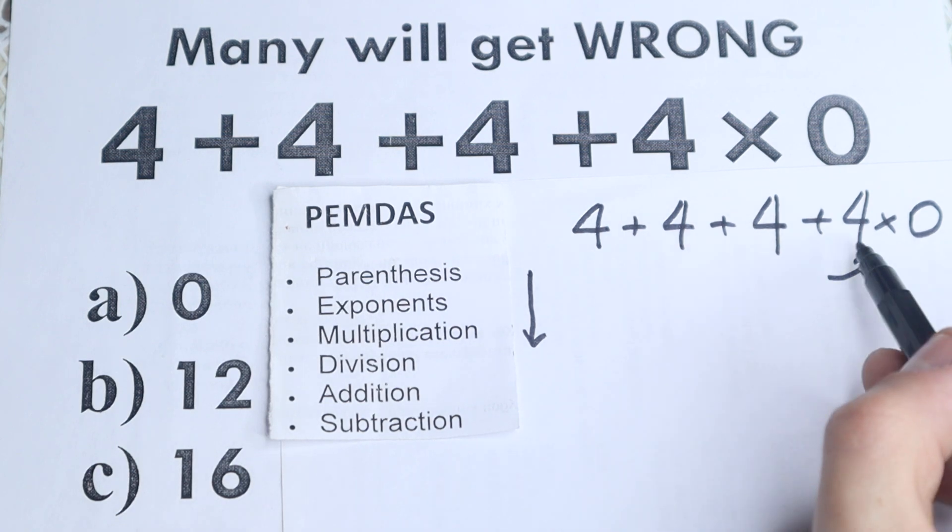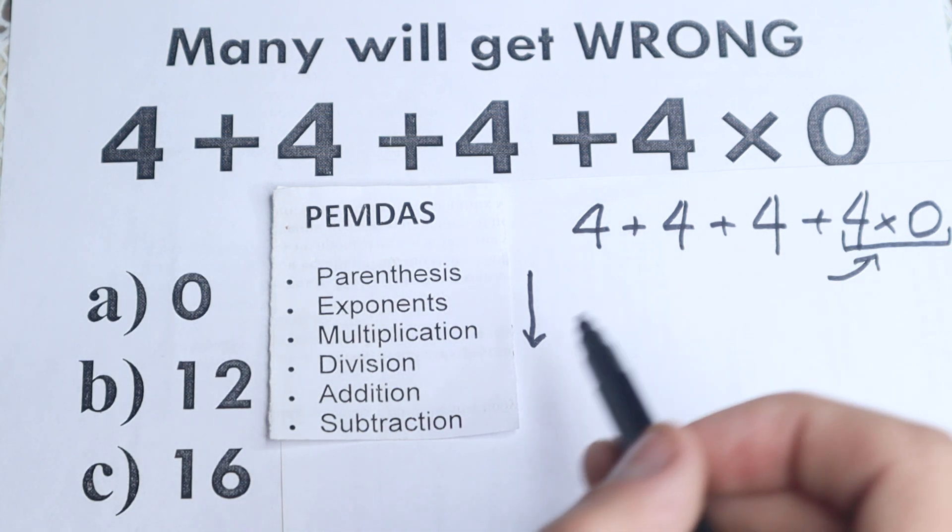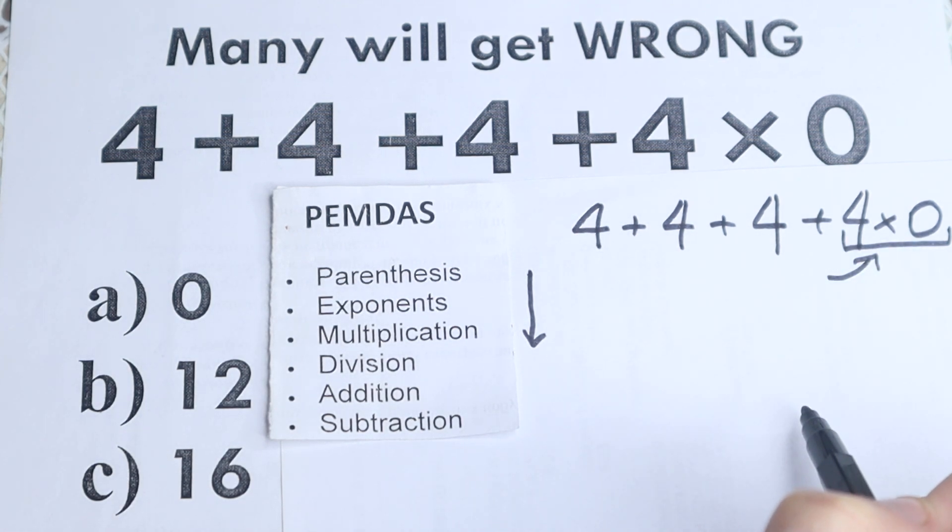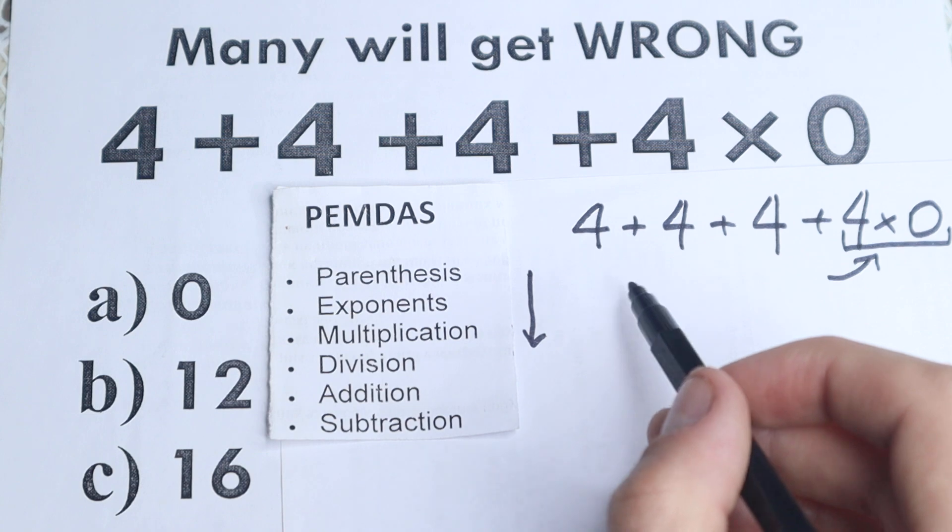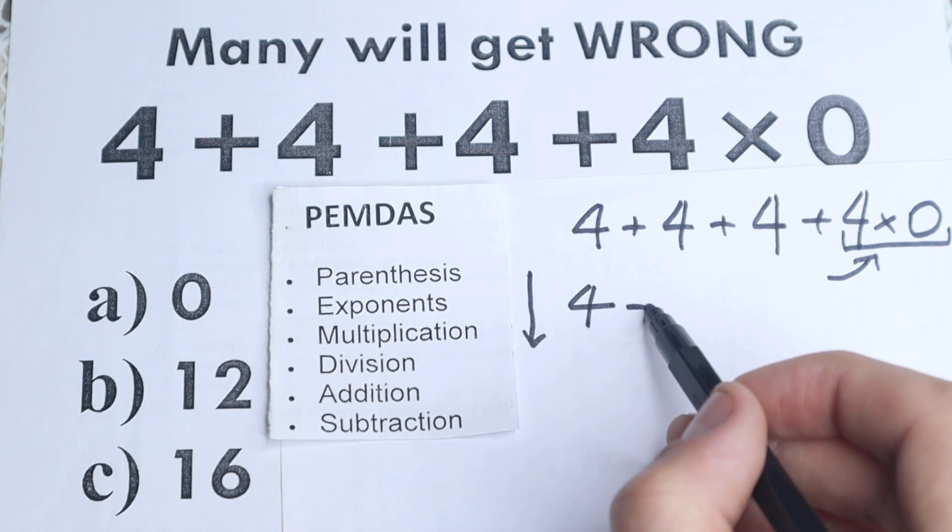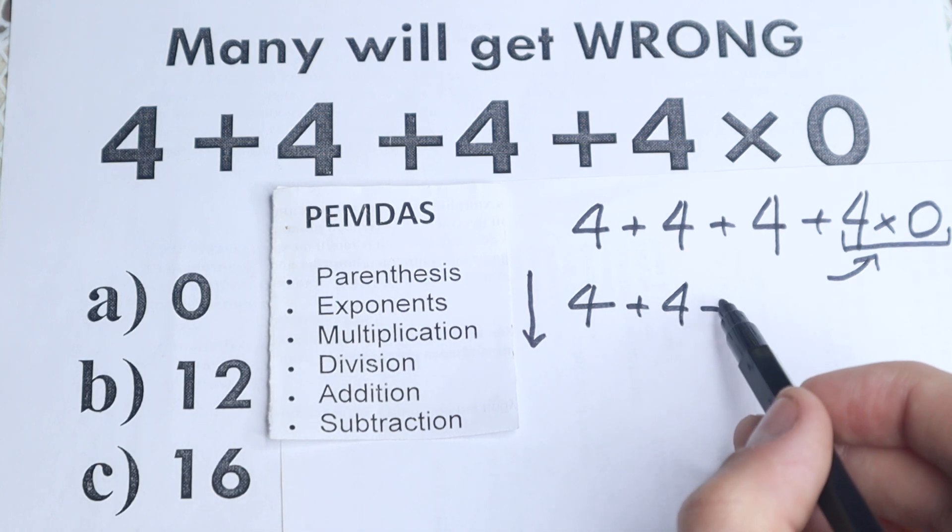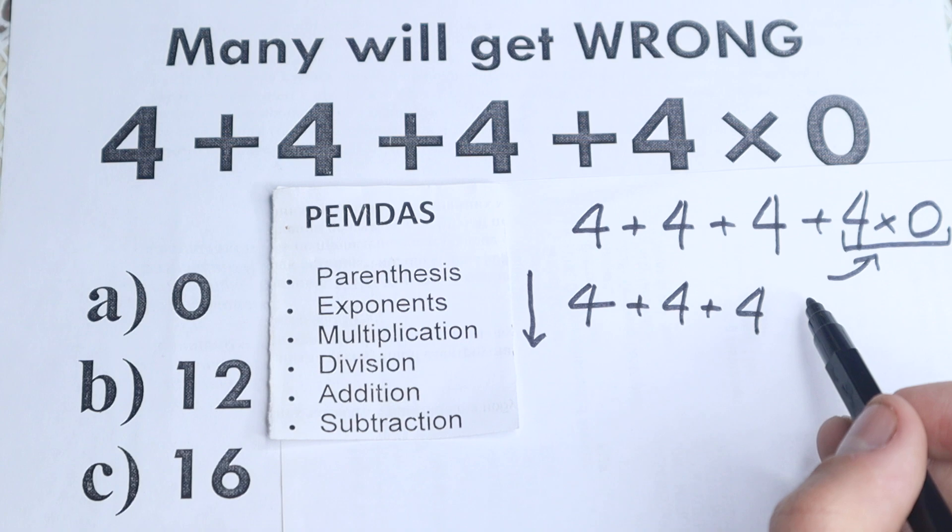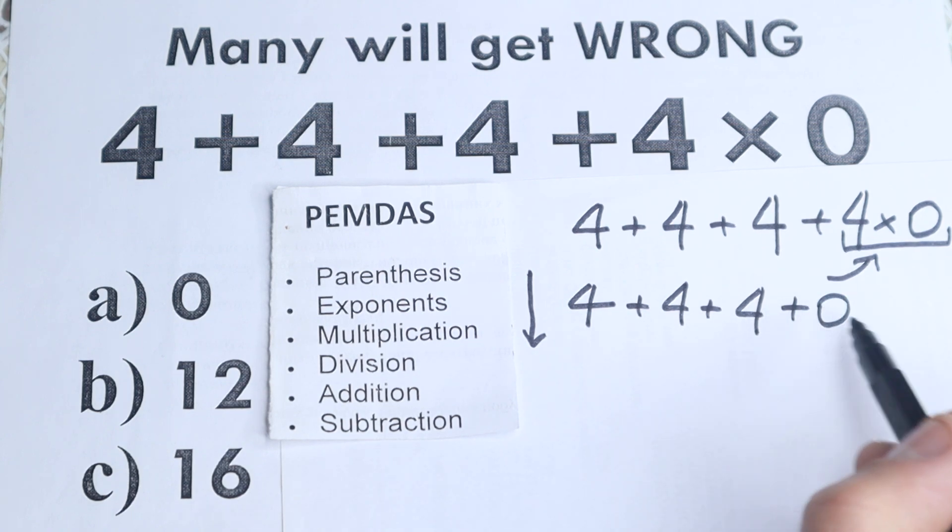So we need to multiply it first, because as you can see right here, addition is after multiplication. So we need to multiply it first, this step. If I multiply it, right here we'll have this addition, so I just rewrite this. So 4 plus 4 plus 4 and right here 4 times 0 equals 0. So we will have like plus 0. So this is maybe the main step right here.